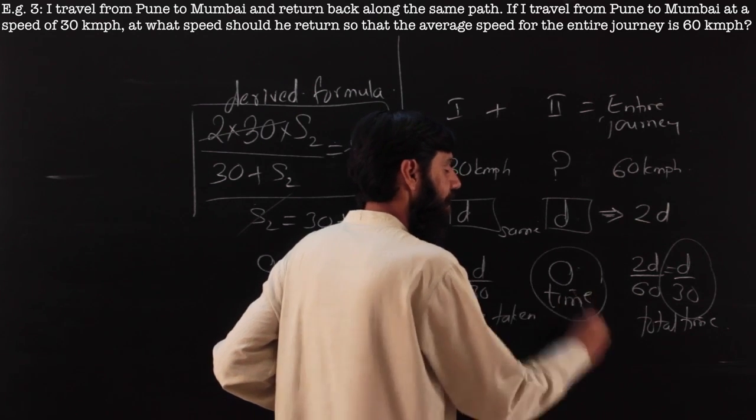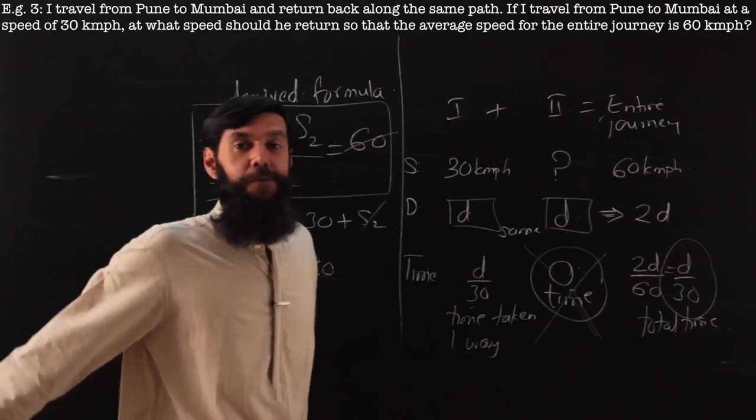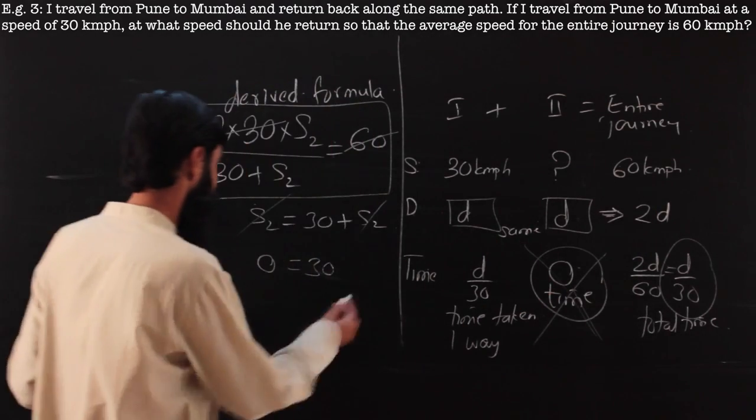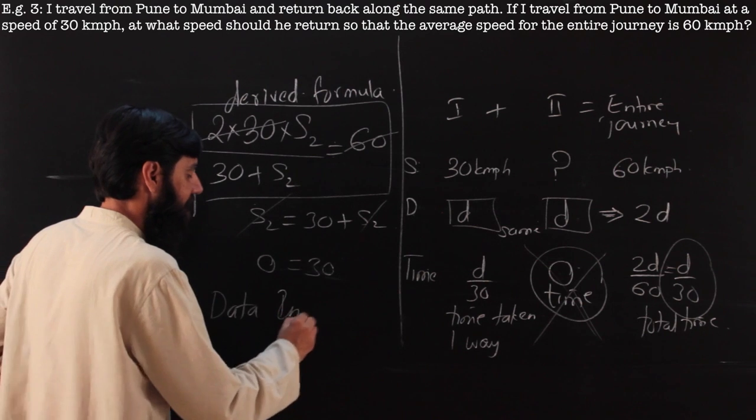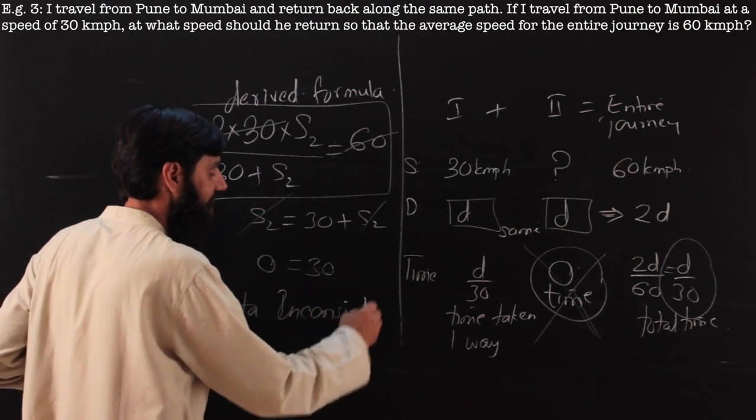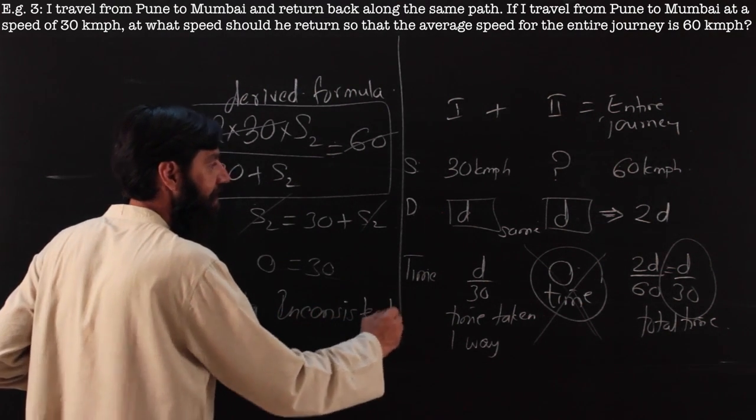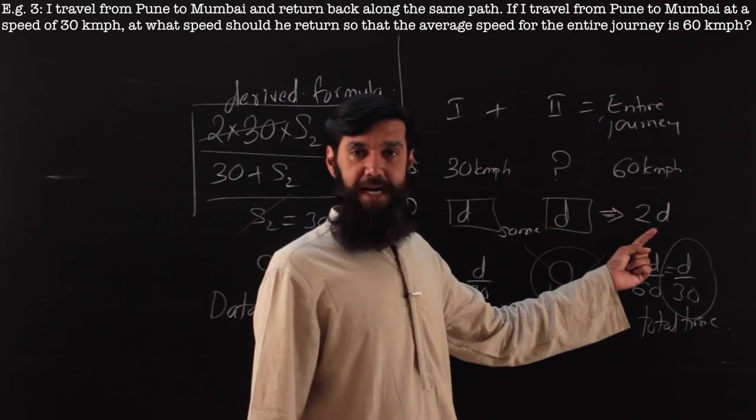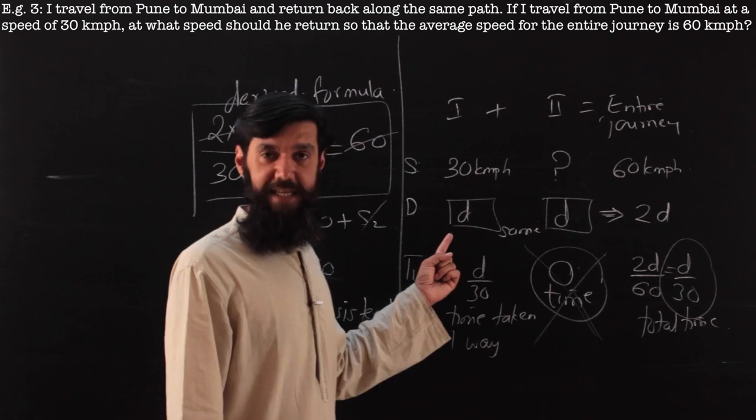Which in fact is same as D by 30. What that means is I should return back in 0 time. Is this possible? Not really. Such a situation, the data is inconsistent.